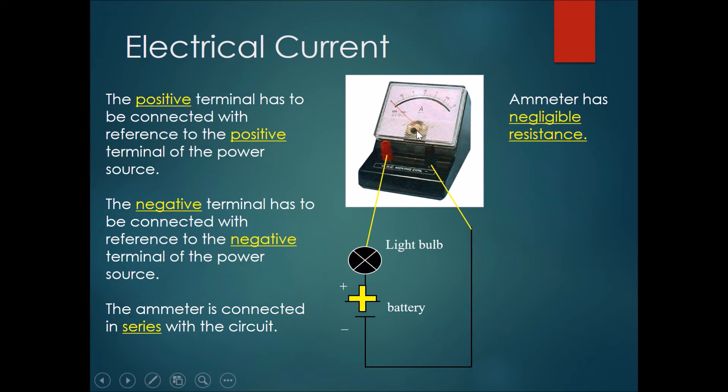The negative terminal of the ammeter has to be connected with reference to the negative terminal of the battery, so it must be connected from negative to negative. The ammeter must be connected in series with the circuit. This means if you want to measure the current through this wire, it must be connected in series with this part of the wire.